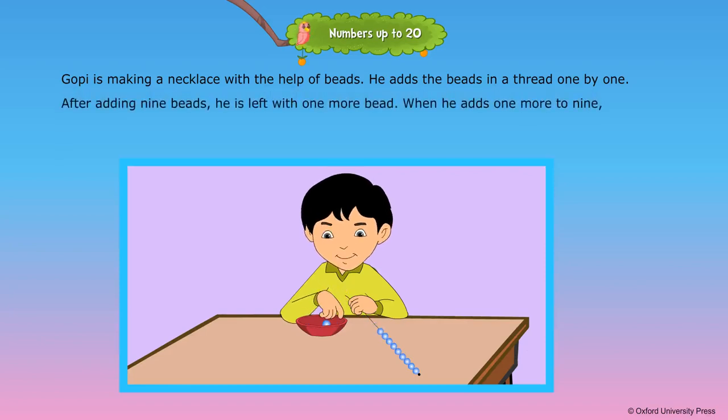After adding nine beads, he is left with one more bead. When he adds one more to nine, it becomes ten. Gopi makes a necklace of ten beads.